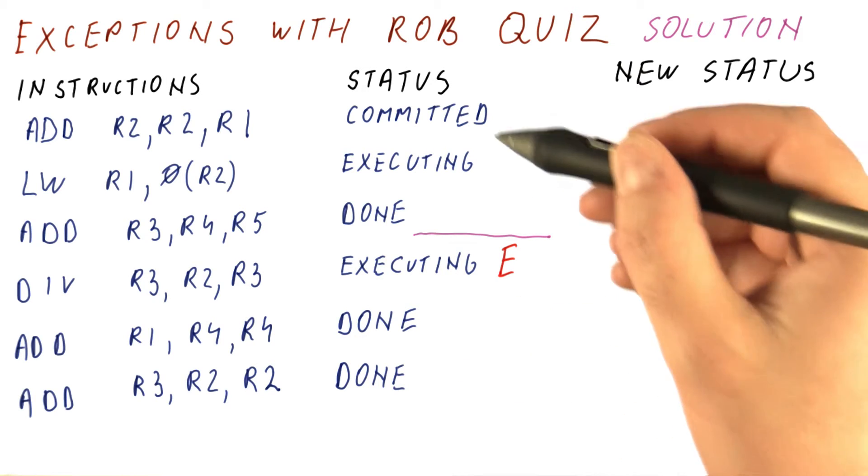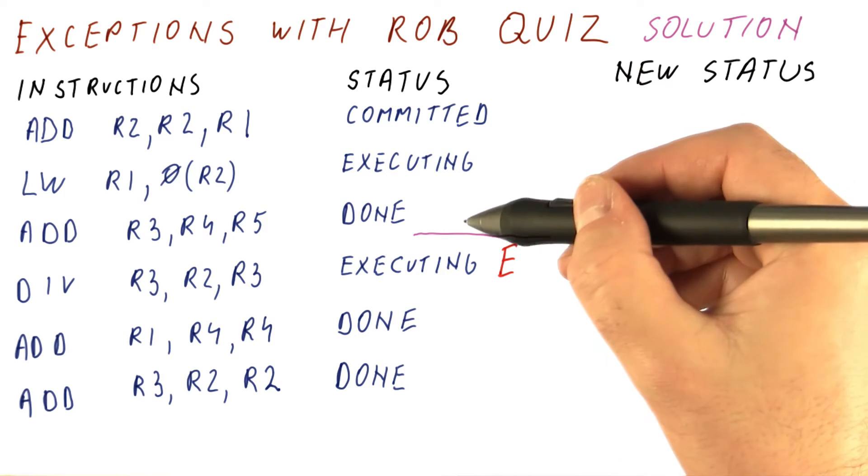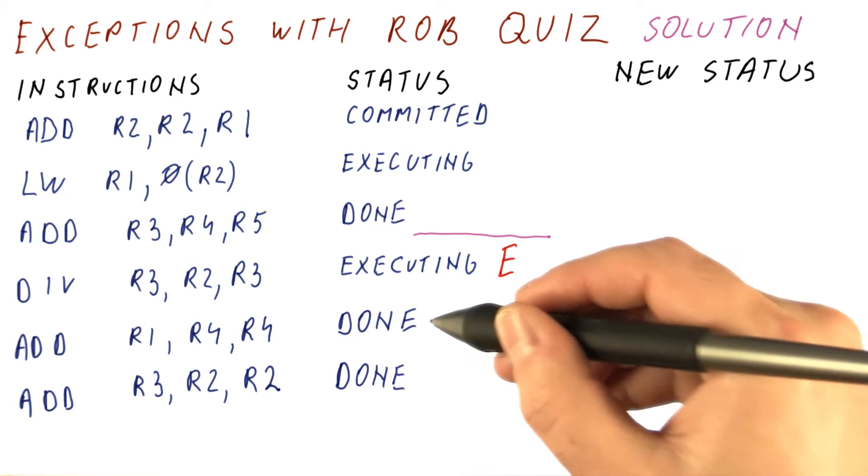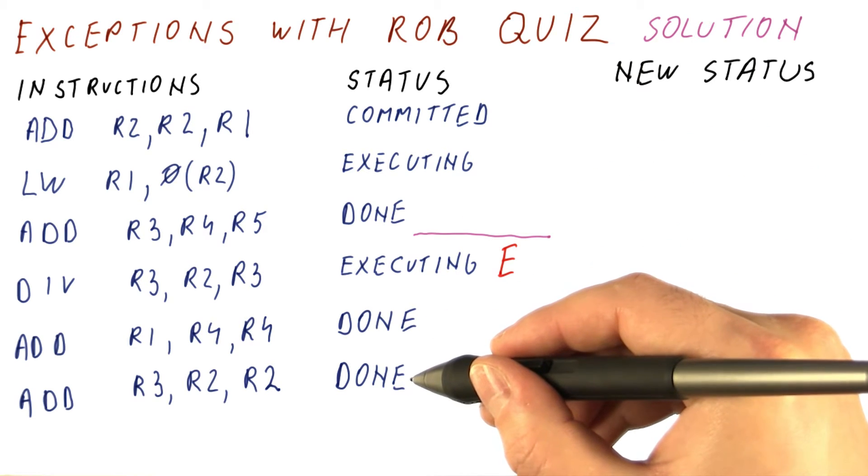So what we need to really do, because the programmer really sees only what has committed here, is the fact that this is done and this is done needs to be undone.